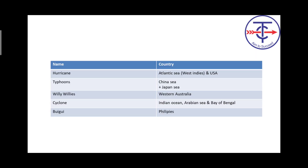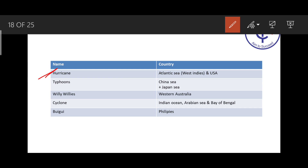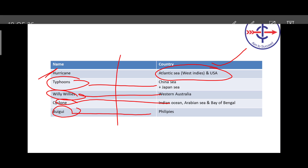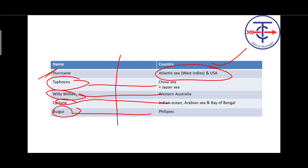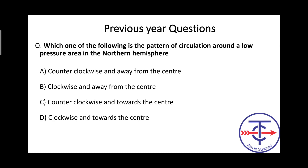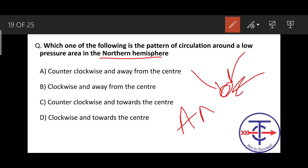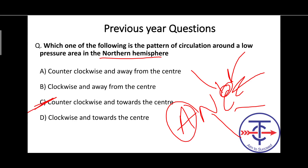Cyclones also have regional names — they are called 'hurricane' in the Atlantic Ocean and USA. These names are also asked in NDA, CDS, and CAPF exams. Now looking at a previous year question: 'Pattern of circulation around a low pressure area in the northern hemisphere.' Low pressure means it's a cyclone, so air moves inward. Northern hemisphere — using the ANC mnemonic: A for anti-clockwise, N for northern hemisphere, C for cyclone. Answer: counter-clockwise towards center — option C.